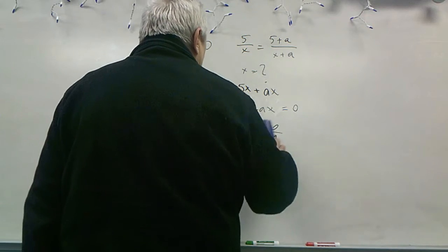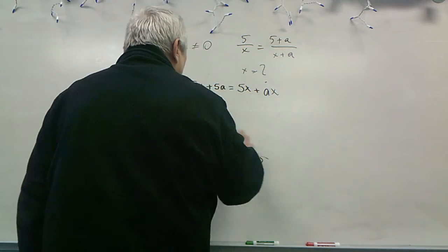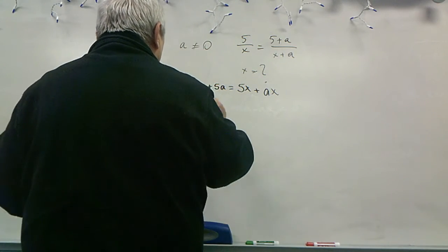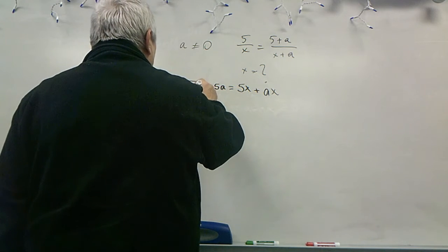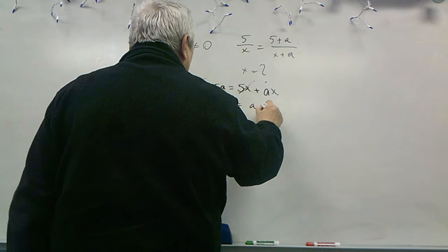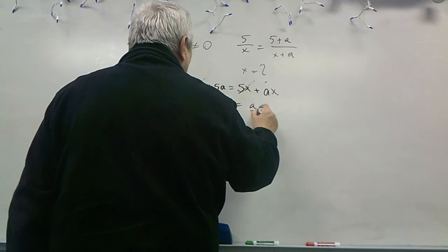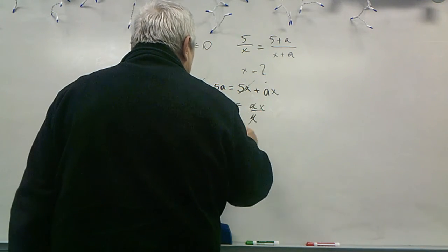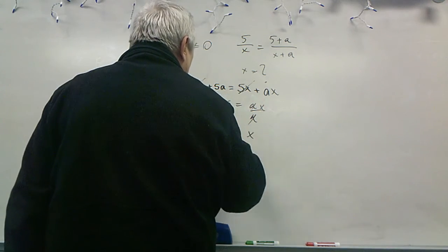My easier way was to not do that. From here we can see that we can disregard 5 minus 5x, and 5a equals ax. Divide by a, and in this case 5 equals x, so that was the answer.